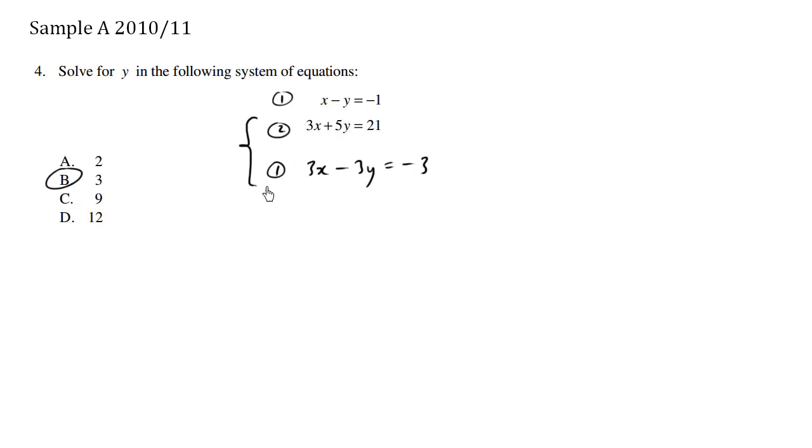So now I'm focusing on these two equations and I'm going to subtract. I have 3x minus 3x is zero, which I don't have to write. And I have 5y.